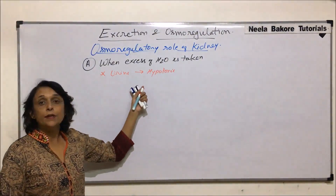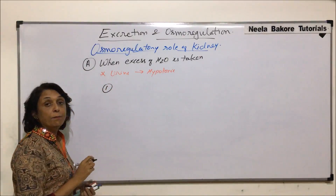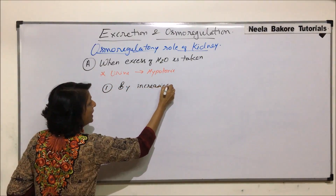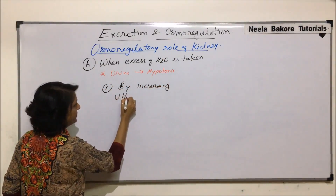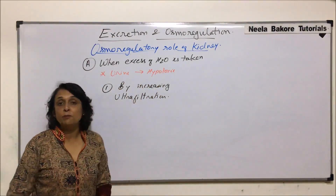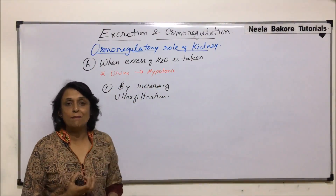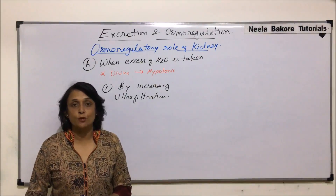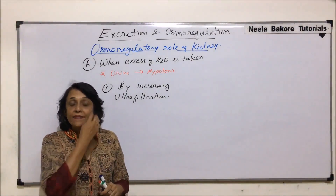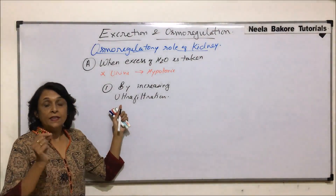This regulatory role is done in two ways. Number one: by increasing ultrafiltration. Ultrafiltration takes place through the glomerular capillaries in the Bowman's capsule under pressure known as glomerular filtration pressure, which is 10 millimeters of mercury.